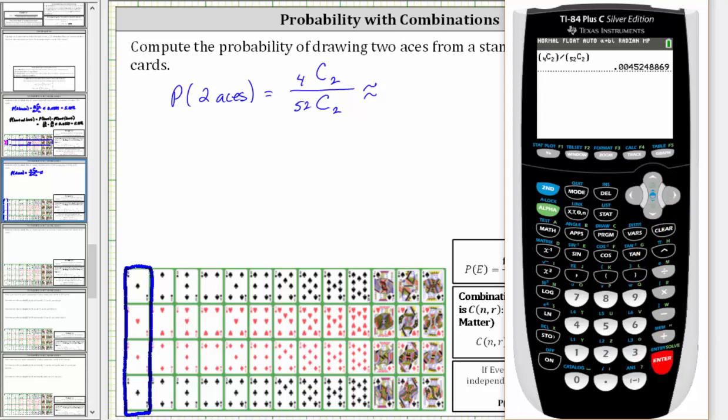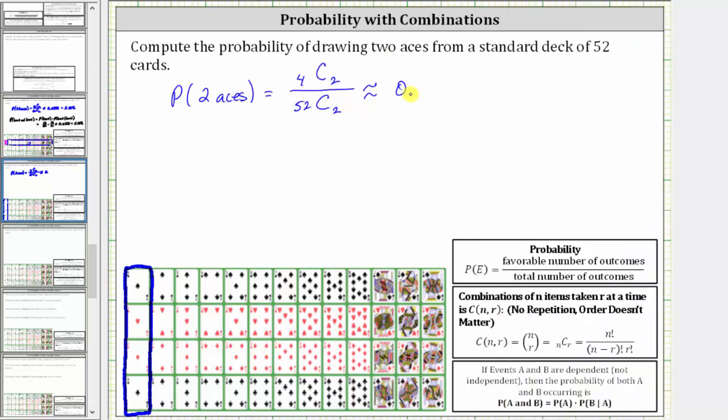To four decimal places, we have approximately 0.0045, which is 0.45%. So this is one way to find the probability.